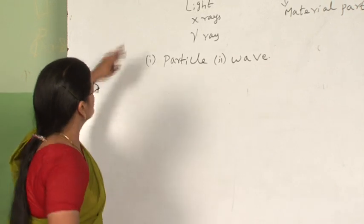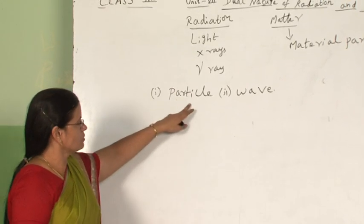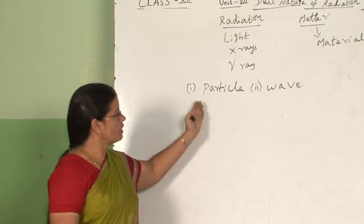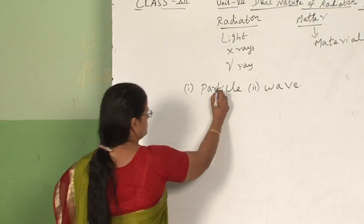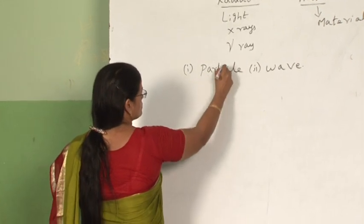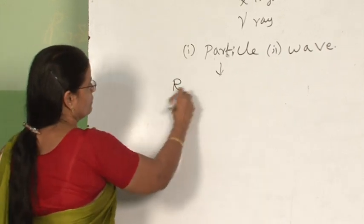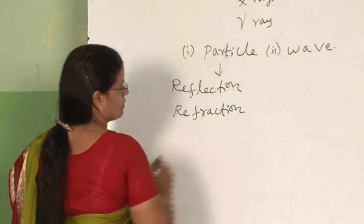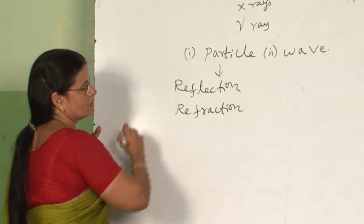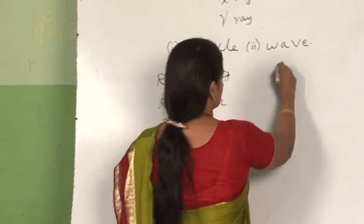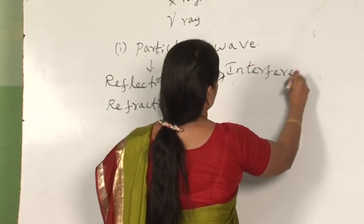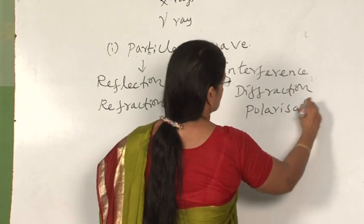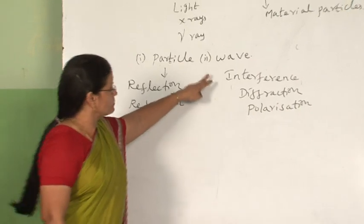First we will study in detail about the dual nature of radiation. As mentioned earlier, particle nature is exhibited when light radiations are emitted from some source or are interacting with some matter. Based on this particle nature we can explain phenomena like reflection and refraction. The phenomena of interference, diffraction, and polarization can be explained only based on the wave theory.